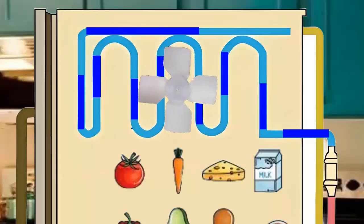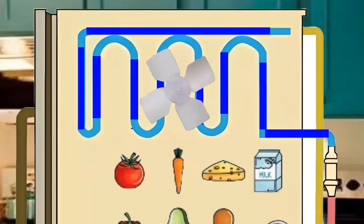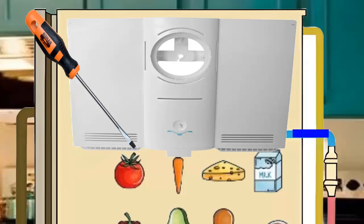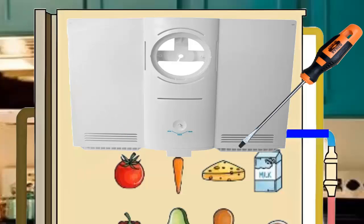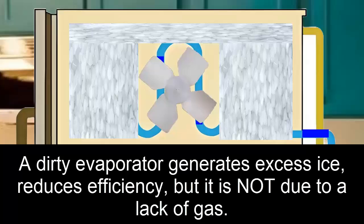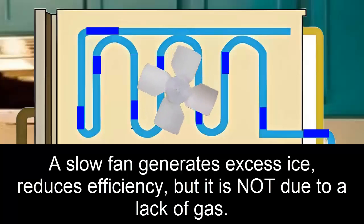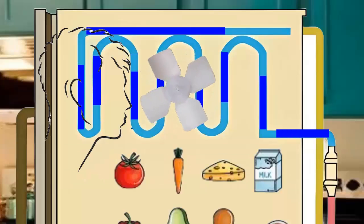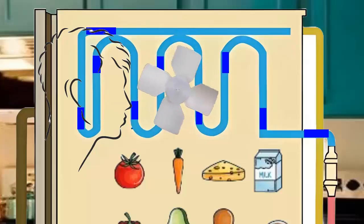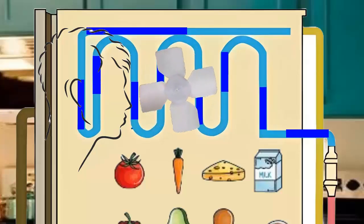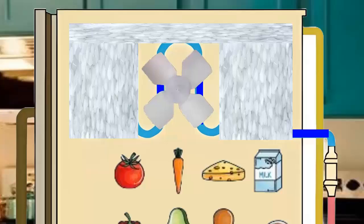Method 3: Freezer Fan Review. Remove the internal cover of the freezer to rule out the presence of internal ice blocks due to poor defrosting or evaporator operation. See if the fan is spinning and doing so at the right speed. A slow fan can cause a deficit in heat exchange, resulting in excess cold and abnormal ice formation.